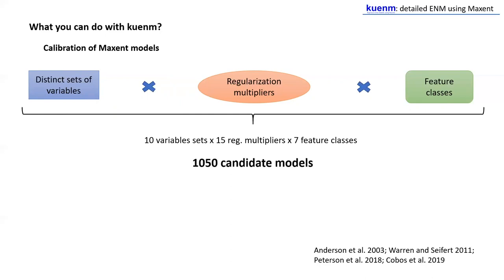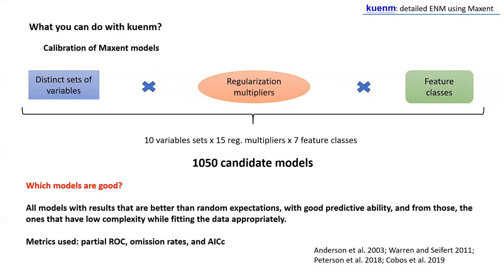From this example, we'll be evaluating 1,050 candidate models. After testing those models with distinct metrics, the question that remains is: which models are good? We think that all models with results better than random expectations and good predictive ability are good. But from those, the ones we pick are the ones with low complexity but also fit the data well. The metrics we use are partial ROC for statistical significance, omission rates for measuring predictability, and AICc — the Akaike Information Criterion corrected for small sample sizes — for measuring data fit and mainly complexity.